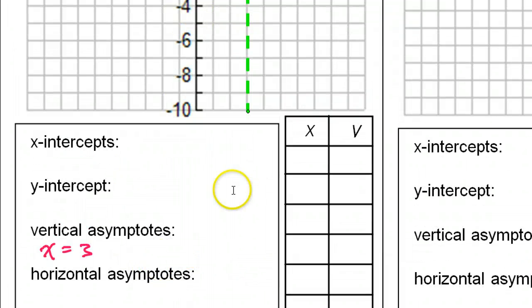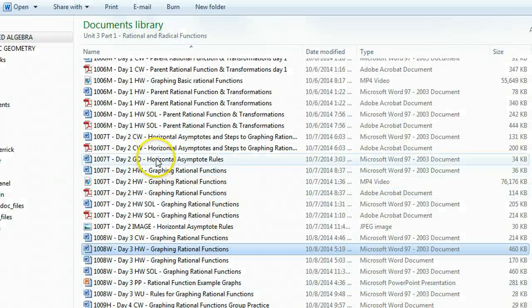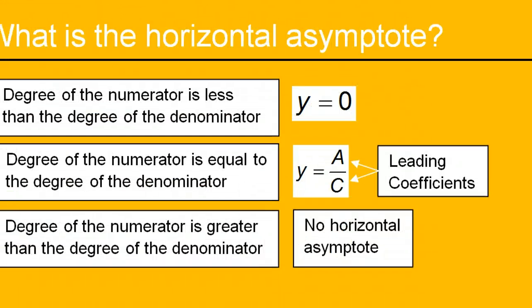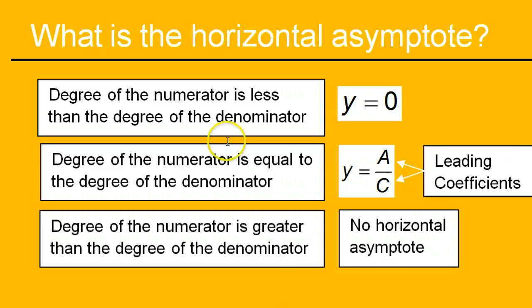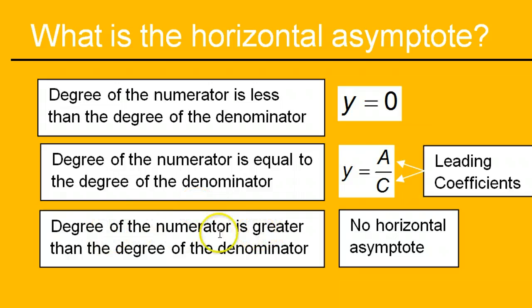Horizontal asymptotes are a bit more complicated because they follow these rules. These are the rules I must use to find the horizontal asymptote — it's all about the degree. If the degree of the numerator is less than the denominator, then the horizontal asymptote is just y equals zero. If the degree of the numerator is equal to the degree of the denominator, then I use the leading coefficients, like a over c. If the degree of the numerator is greater than the degree of the denominator, then there is no horizontal asymptote.